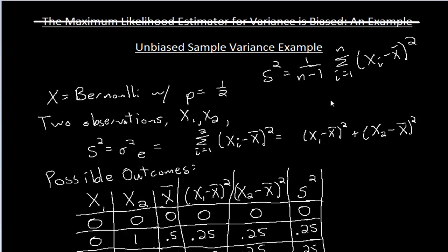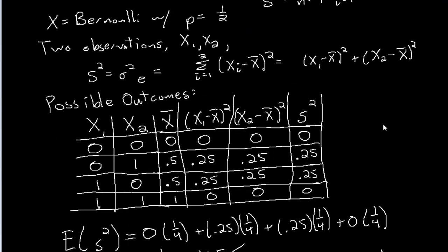The 1/2 is gone now. I just need to go down and fix what I have here. My S squared values no longer have a 1/2. So instead of having 0.25, everything is going to be twice as big because I didn't multiply by a half this time. So 0 is still going to be 0, but the other values are going to turn into 0.5 — they're twice as big since I'm not multiplying by a half.